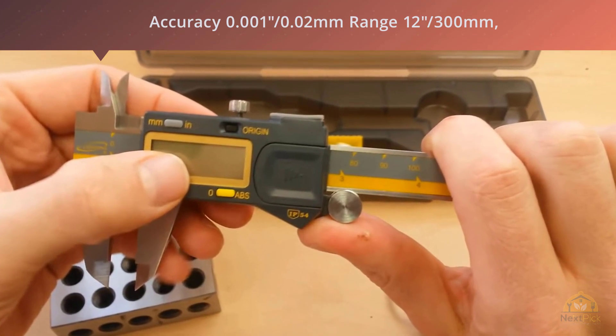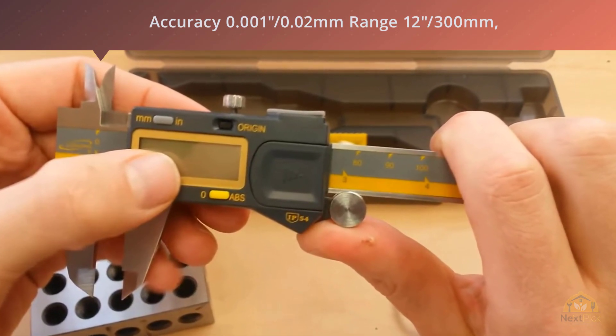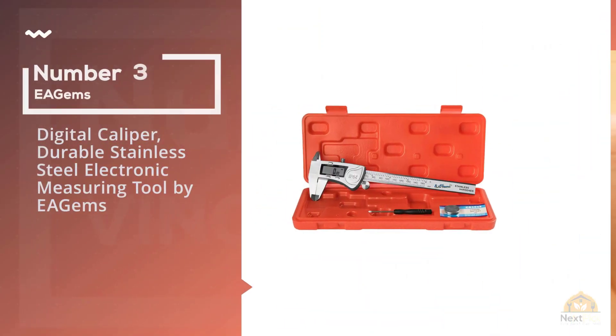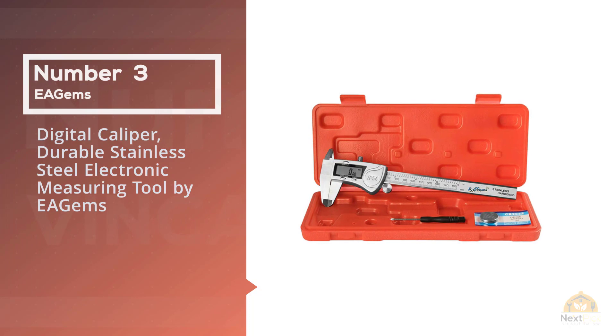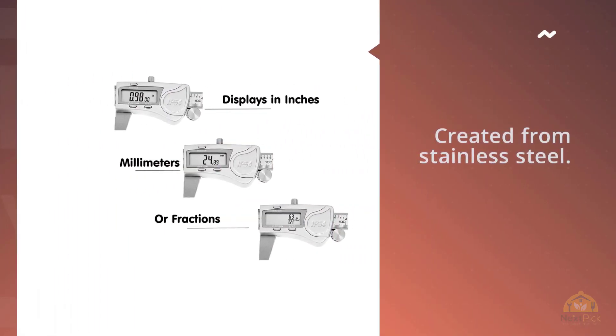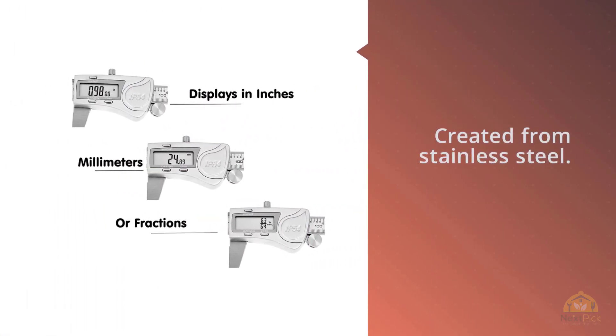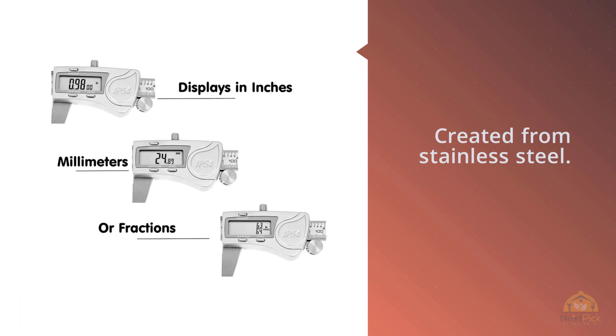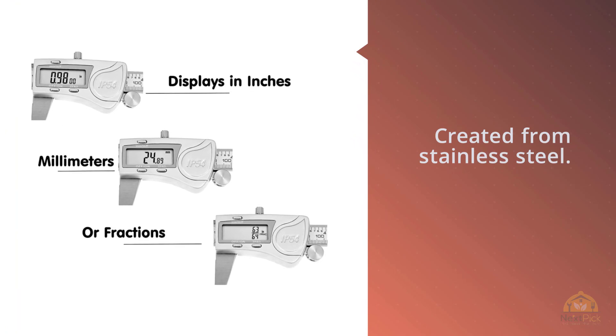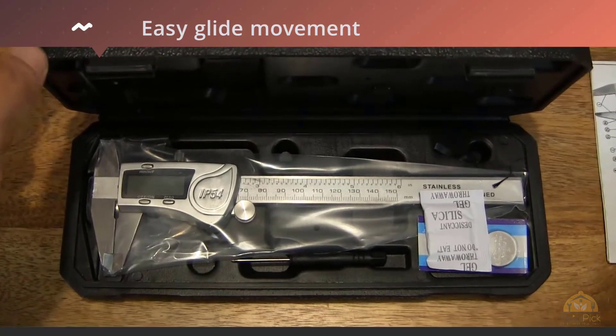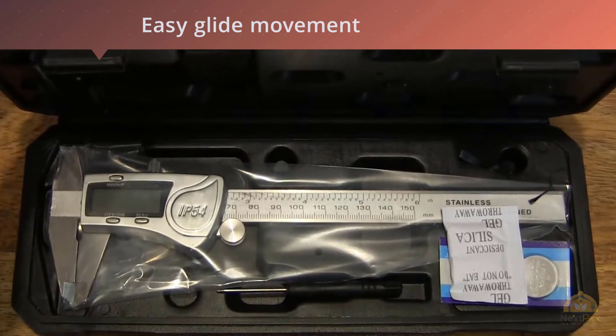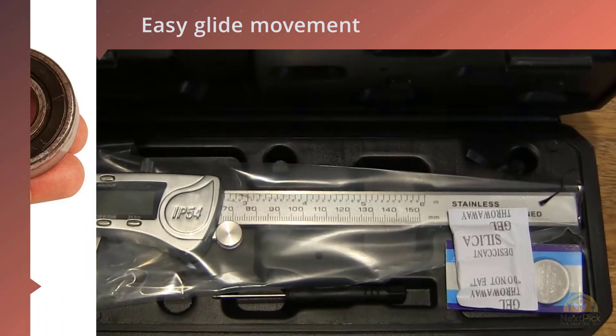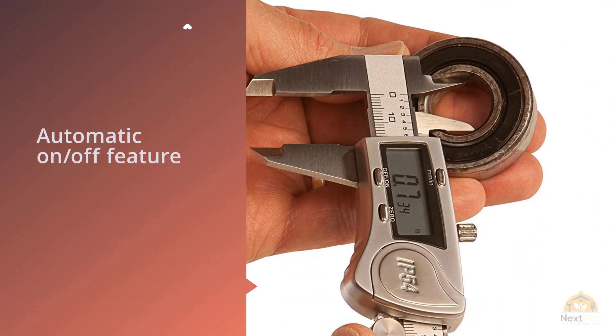Number three: Digital Caliper Durable Stainless Steel Electronic Measuring Tool by EA Gems. The EA Gems digital caliper is created from stainless steel. Its construction gives it an easy glide movement and increases its overall accuracy. It has an automatic on-off feature to reduce battery usage and has an IP54 rating, meaning it has a good level of dust and liquid resistance. The calipers can convert between inches, millimeters and fractions and is ideal for both professional and DIY use.